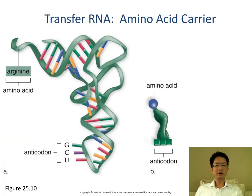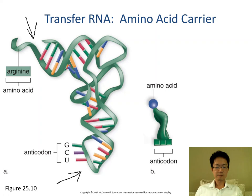The transfer RNA looks like a boot shape. One end of the boot carries the amino acid; the other end of the boot carries the anticodon. So you have the amino acid on one end and the anticodon on the other end.